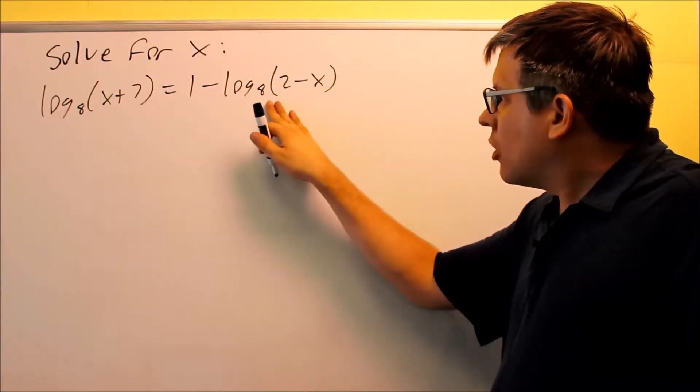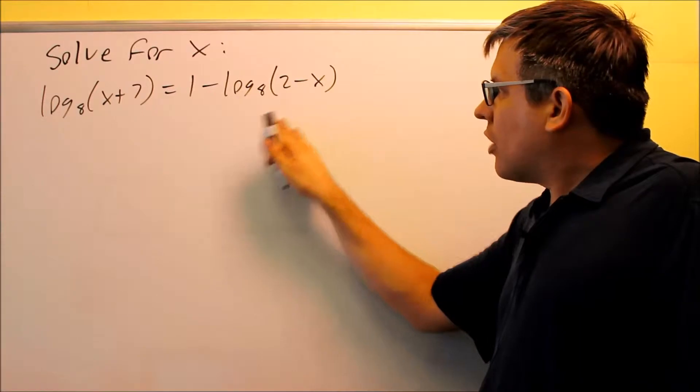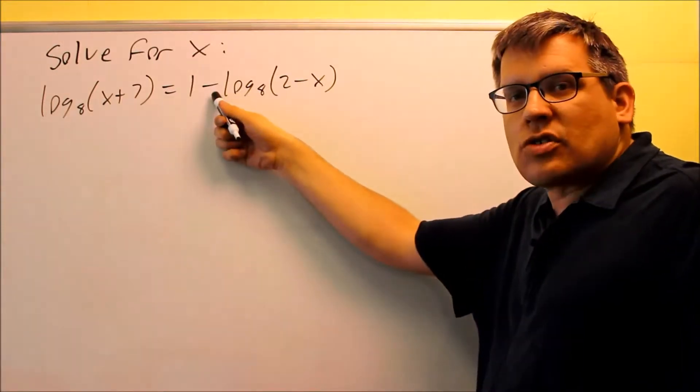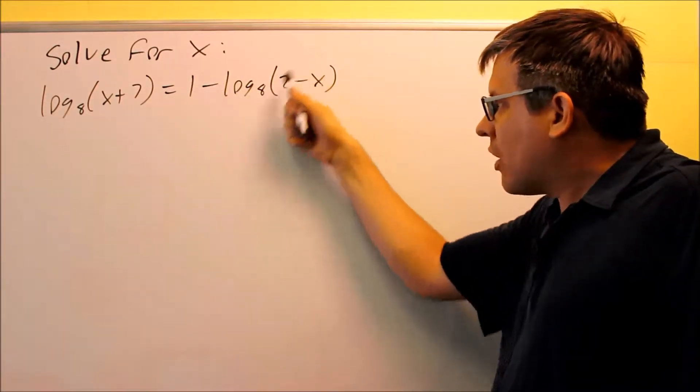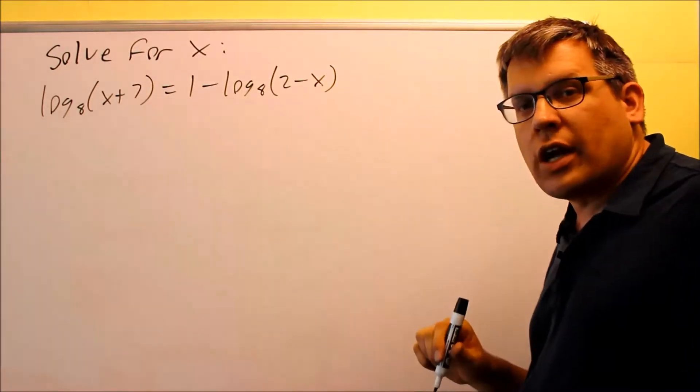So I'm going to move this term, move it across the equal sign, and it's going to become positive. If you move this across the equal sign, you're only going to change the sign in front. You're not going to change anything else inside here. You're not allowed to change anything inside there. You're only changing the one on the outside.